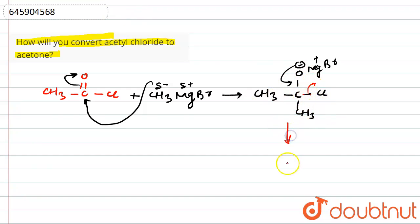Along with that, the byproduct is MgBrCl. So this is how you can convert acetyl chloride to acetone. I hope you understand this concept. Thank you.